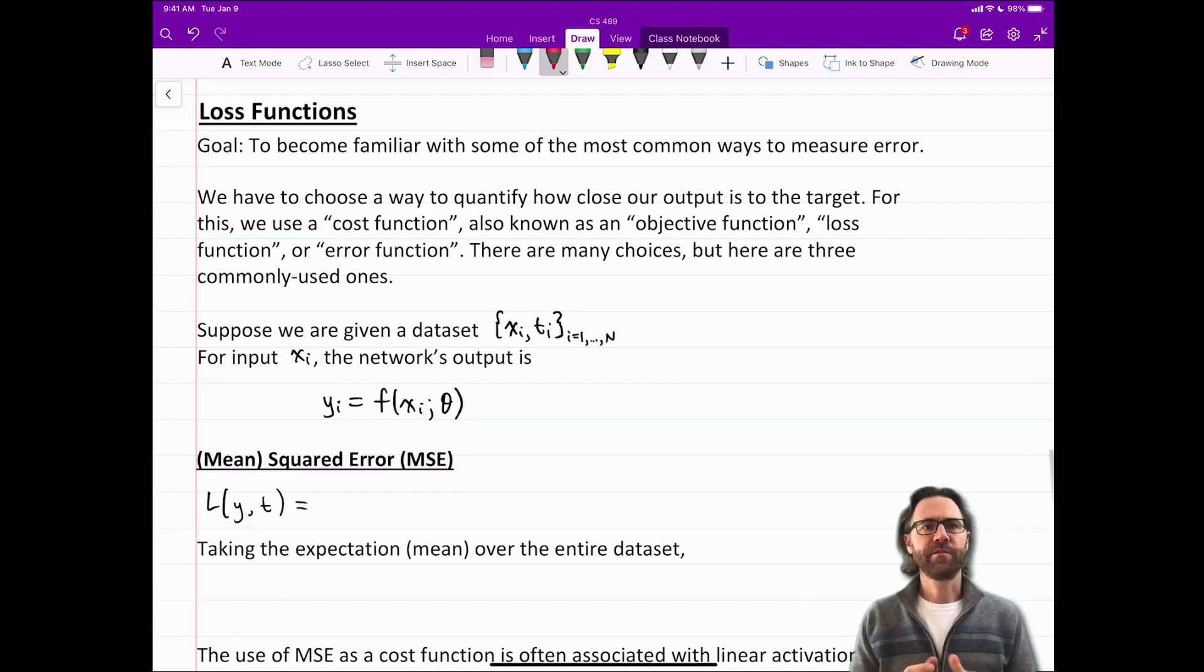Okay, so today we're going to talk about loss functions. The goal here is to become familiar with some of the most common ways to measure error. So we have to choose a way to quantify how close our output is to the target. How do we measure how close we were or how far away we were? For this we use a cost function which is also often called an objective function or a loss function or an error function. So I will use those terms interchangeably. There are many choices but here I'm going to talk about three main choices.